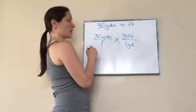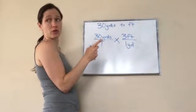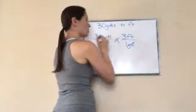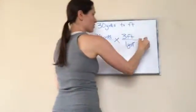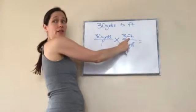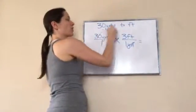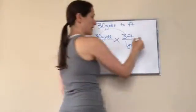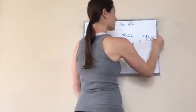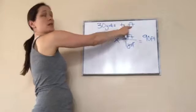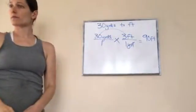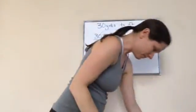30 times three. So wait a minute. What can we cross out though? Yards. Yards and yards. Very good. So then that gives us the answer in feet, which is what we're wanting to convert it to. So 30 times three is 90. 90 feet. Very good. So 30 yards is 90 feet. Feel like you understand it? Yeah.